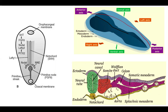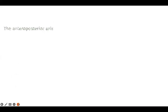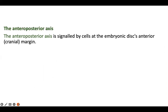If you can see this picture, starting from this particular point to the back side — that is the posterior one. From this portion to the back portion, this is the antero-posterior axis. The antero-posterior axis is signaled by cells at the embryonic disc's anterior — that is, the cranial margin.